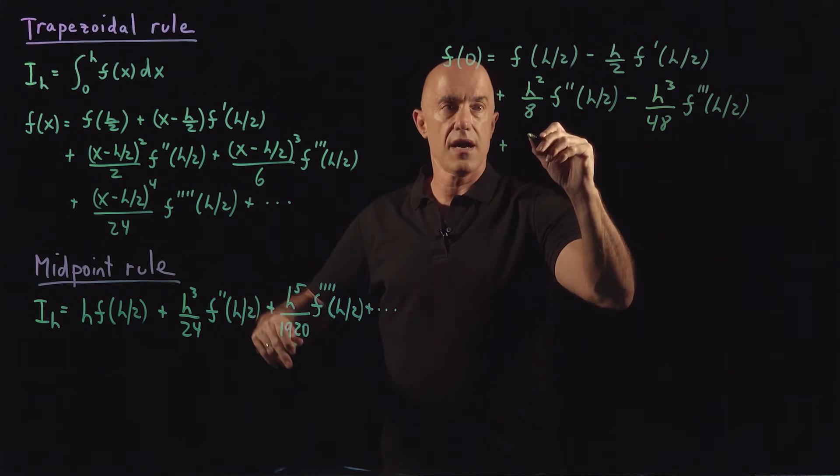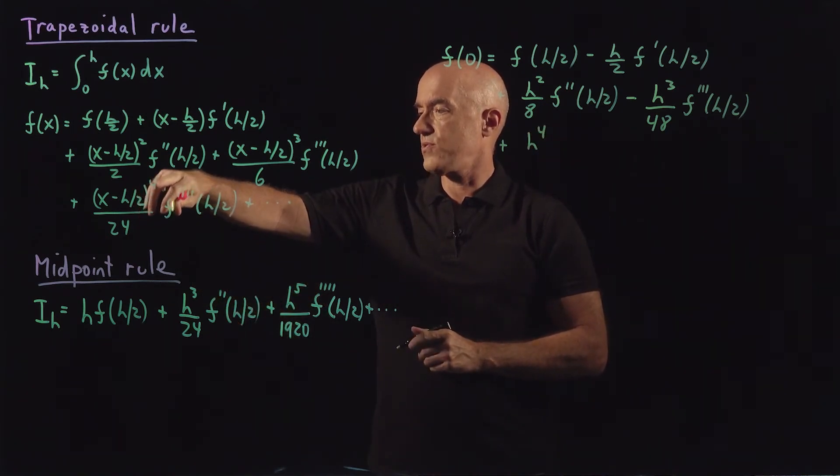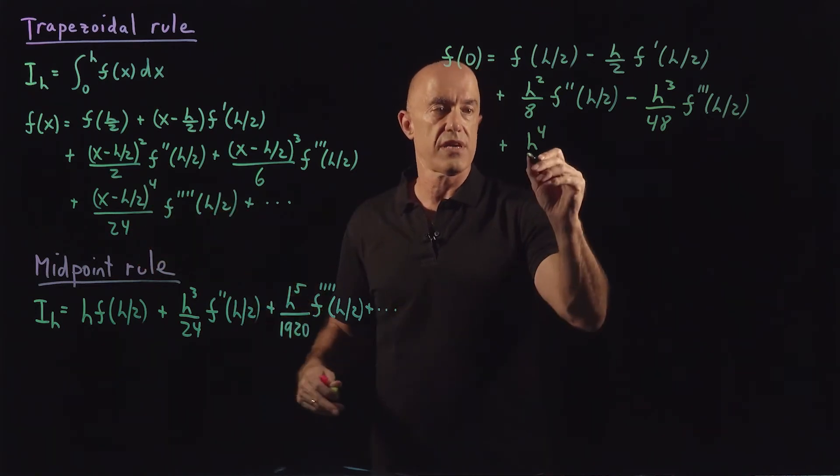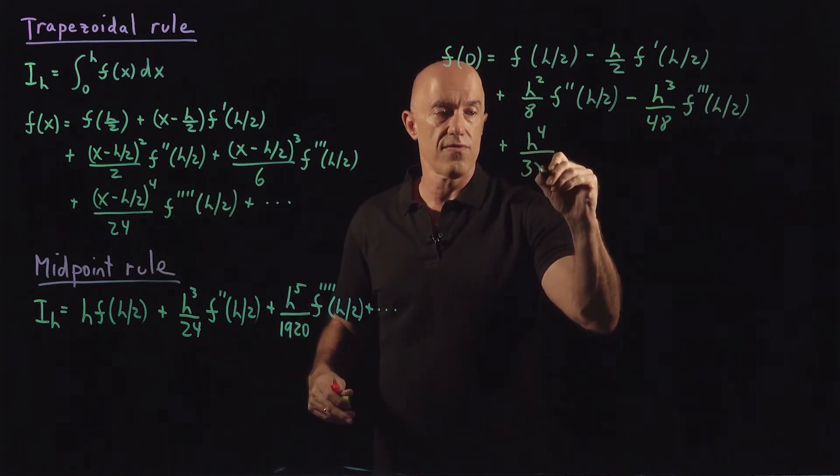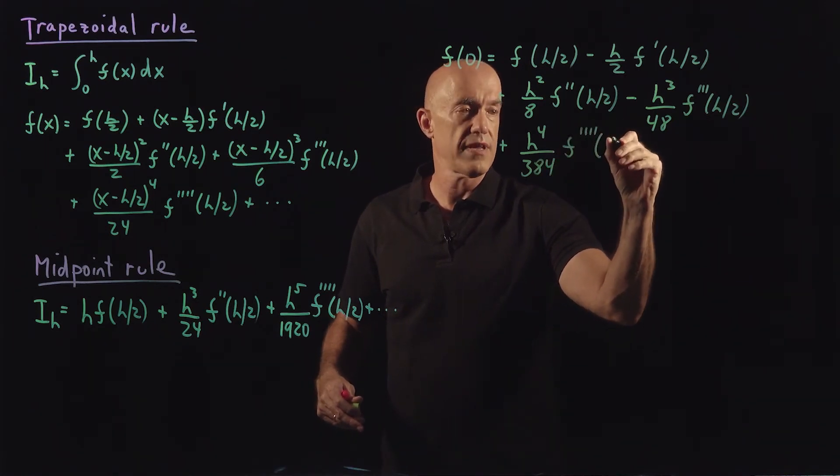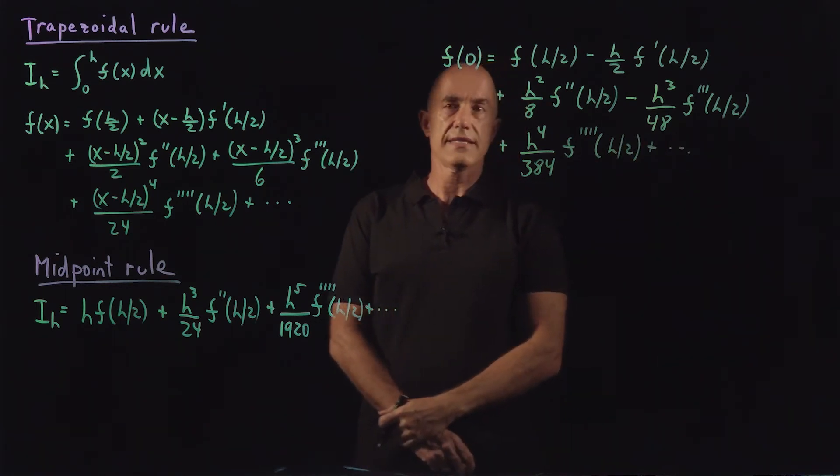And then the last term will be a plus, so plus h to the fourth. And then we have 2 to the fourth times 24, which works out to 384, so over 384 times the fourth derivative. That's f of 0.